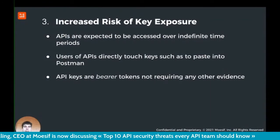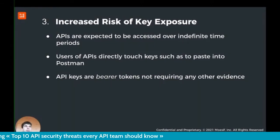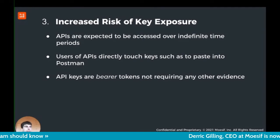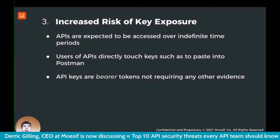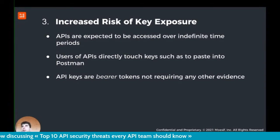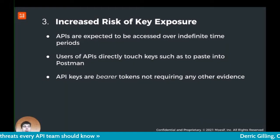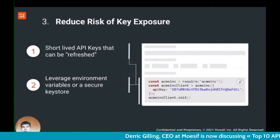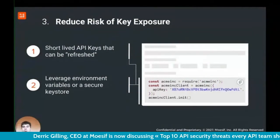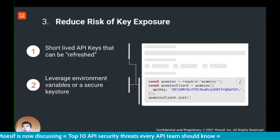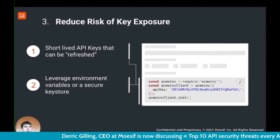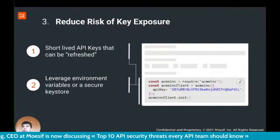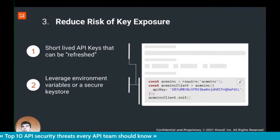The third thing we see is key exposure. APIs are often accessed over long or indefinite periods, and developers frequently copy and paste keys into tools like Postman or curl commands, touching those tokens daily. All you need is a bearer token to access an API — no other evidence required. One way to reduce this exposure is using a refresh token paired with a short-lived token. The short-lived token might expire after an hour or two, so even if exposed, it's already expired by the time a hacker gets it. The refresh token, stored securely in a key store or service developers don't access daily, is what generates these short-lived tokens.